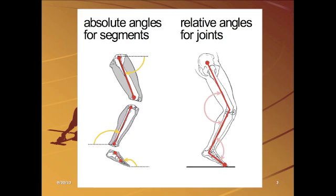As you see here, the line of reference is the parallel line with the ground. As you see, there's one at the hip joint and the ankle and the toes.